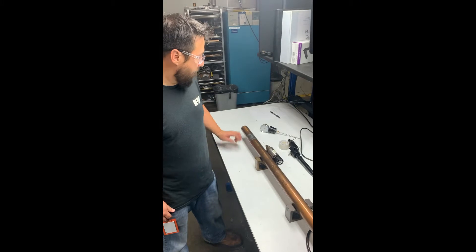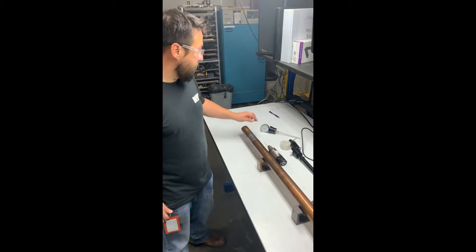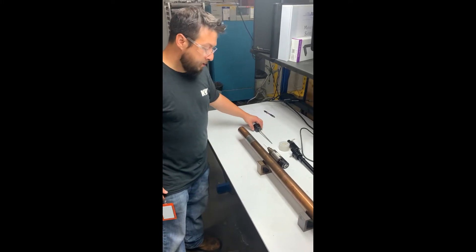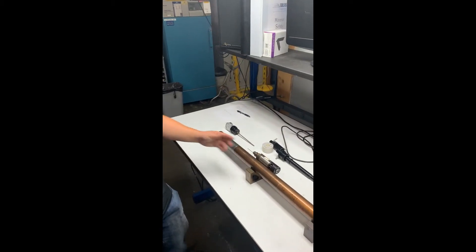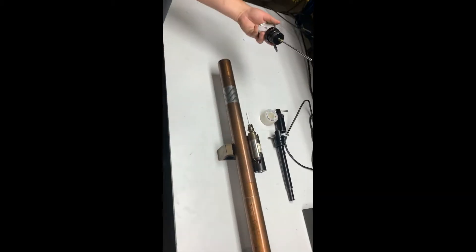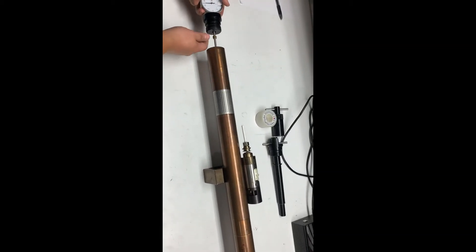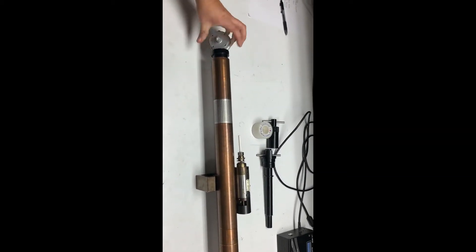Next step we will be verifying our orifice location using our gap setting tool. This is a critical step for having a proper pulse. Take your gap setting tool and insert it through your orifice holder and screw it into your tool.